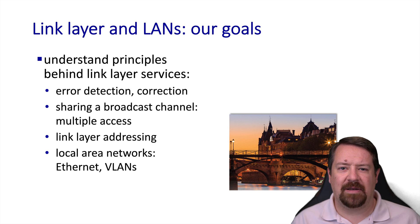To do that, we'll first understand the principles behind link layer services, as we've done with each chapter throughout the course. These include things like detecting and correcting errors, and actually sharing access to a limited resource, whether that's RF spectrum or bandwidth on a wired connection. Then we'll get into the details of addressing at the link layer, which works very differently from IP addressing. And we'll look at the details of the most common local area network technologies, such as Ethernet and VLANs.